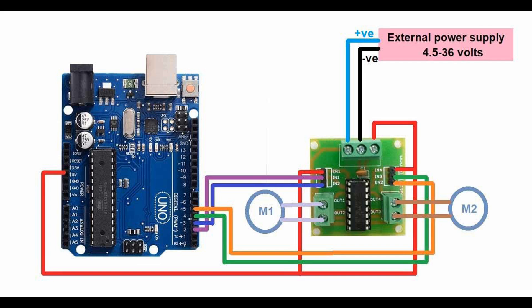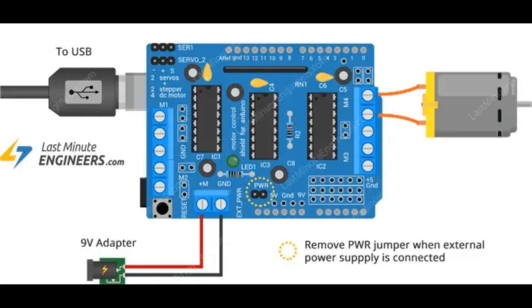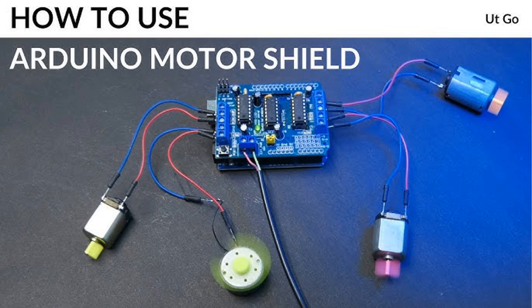Many motor drivers include current sense resistors or sensors to monitor the current passing through the motor, which helps detect motor stall conditions or overcurrent situations. Current sensing provides feedback to control circuits, enabling features like current limiting or dynamic braking. Because motor drivers often handle large currents, they generate heat. Components like heat sinks, thermal pads, or built-in temperature sensors are used to manage heat dissipation, improving longevity and reliability. Capacitors help smooth out voltage fluctuations and filter noise from the power supply, providing stable operation — especially important in high-power motor drivers where motors can introduce significant electrical noise.